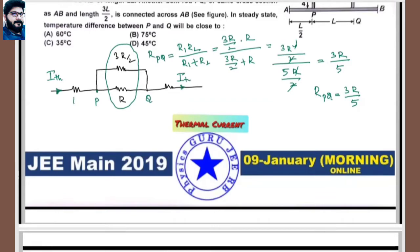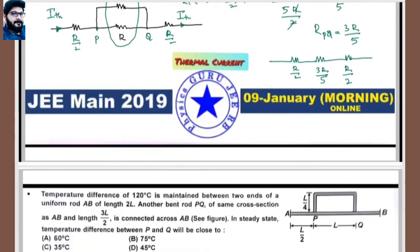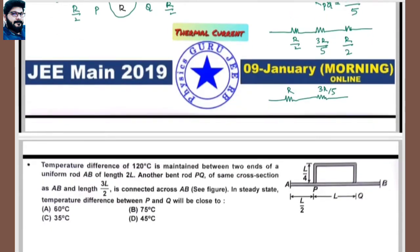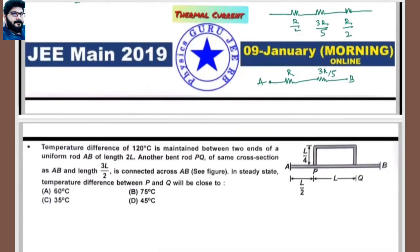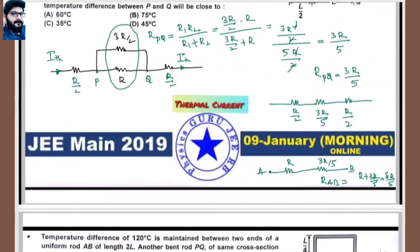Now the total resistance from A to B: R_AB = R/2 + 3R/5 + R/2 = R + 3R/5 = 8R/5. Thermal current = ΔT_AB / R_AB = 120 / (8R/5) = 600 / (8R).